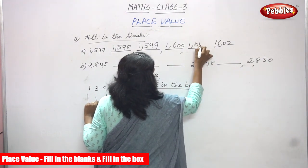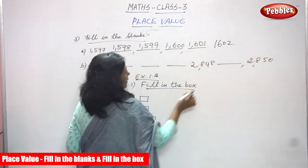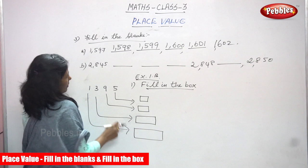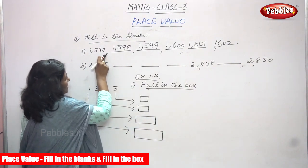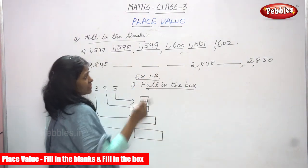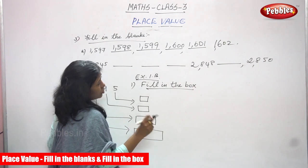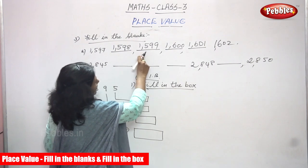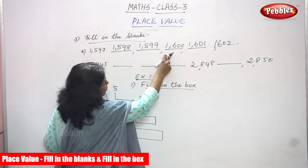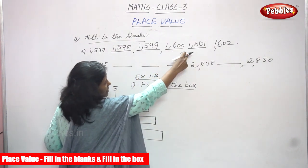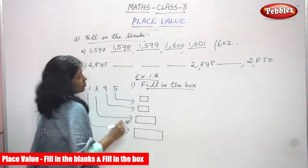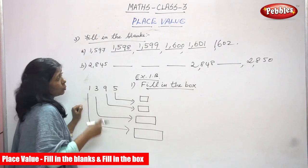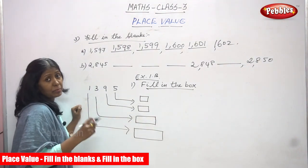1601. So finally, what is the number? 1602. Now you fill in the blanks. So 1597 is the starting number and 1602 is the ending number. The remaining blanks you have to fill up: 1598, 1599, 1600, and 1601. You must be very thorough with the numbers — only then you can fill the blanks. You have to concentrate on the numbers more.